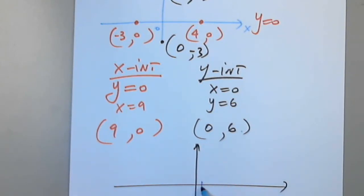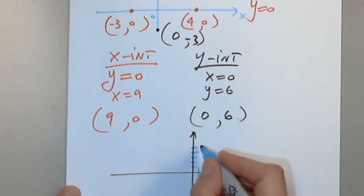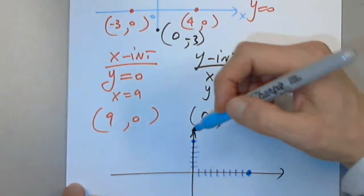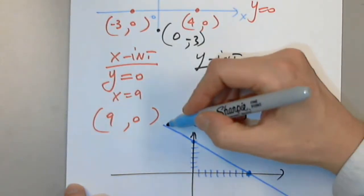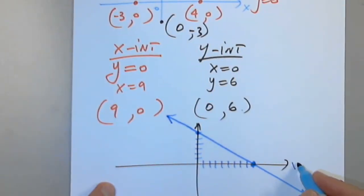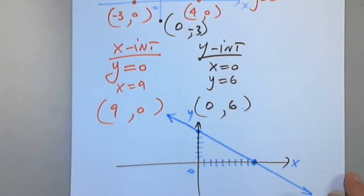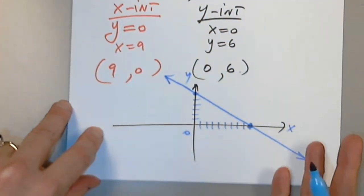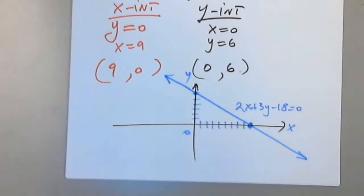So I have two points to plot: 9 comma 0 and 0 comma 6. Connect and extend the line. Always write the equation somewhere close to the graph so you know what you graphed. Any questions?